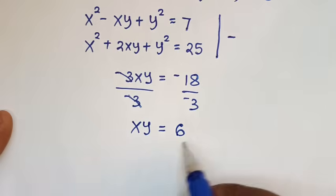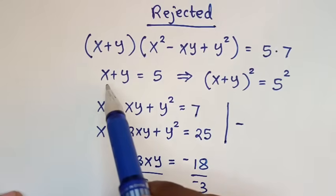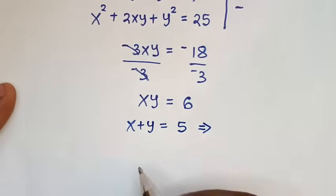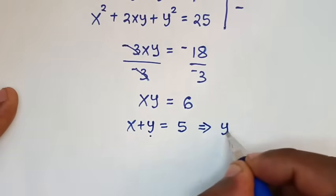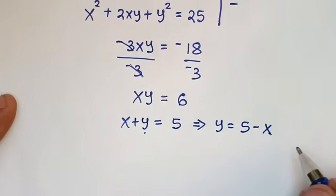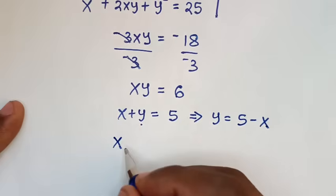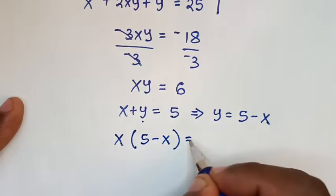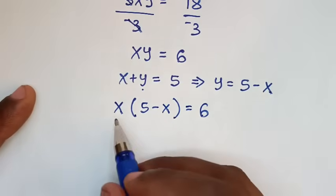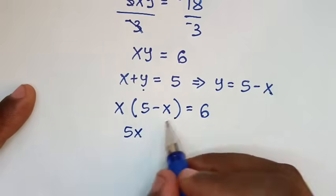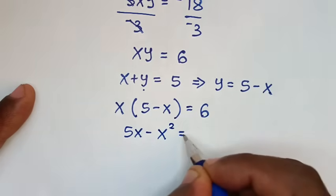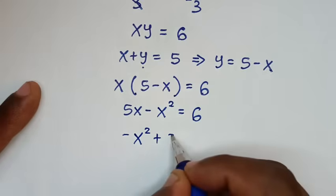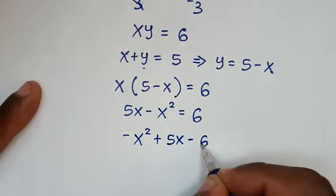From xy equal to 6, to find x and y we use x plus y equal to 5. We make y the subject: y is equal to 5 minus x. Then xy equal to 6, so x times bracket 5 minus x bracket is equal to 6. So x times 5 is 5x, x times negative x is negative x squared, is equal to 6.